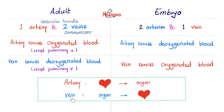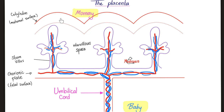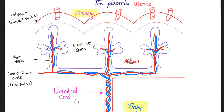Here is the structure of the lovely placenta. This is the maternal surface or the maternal interface. This is the fetal side containing the umbilical cord. Mommy's blood vessels are here — they are called uterine vessels because they are connected to the uterus. The baby's vessels are here in the umbilical cord.